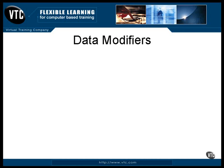You can use more than one modifier on a data declaration as long as no two of them conflict. For example, one common pair is final static. One makes the value constant, the other causes there to be just one copy of it — the one in the class definition. You only need one copy of a constant value because all you're going to do is read it. The order of the modifiers doesn't matter, except that they all must come before the data type declaration, and the data type declaration must come right before the name of the data item being declared.